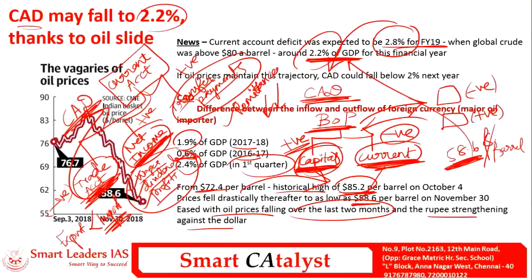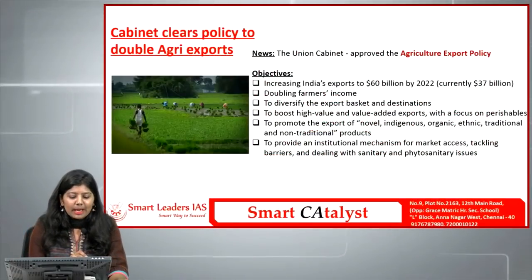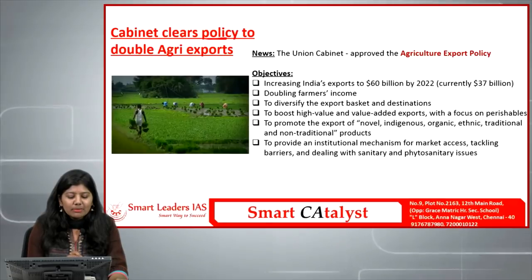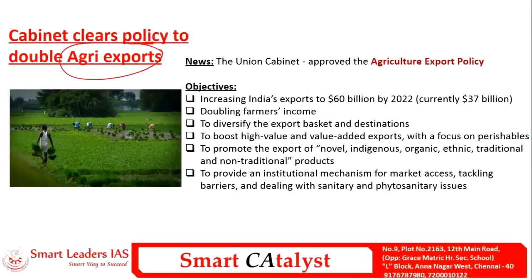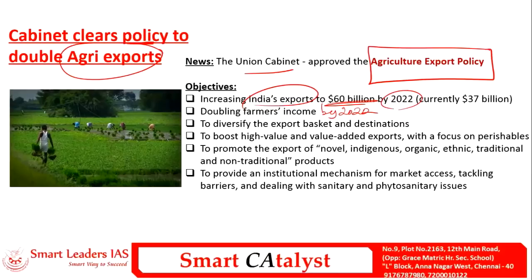In our country, the current account is in deficit and the capital account is in surplus. The next article is cabinet clears the policy to double agri exports. Our government is aiming to double farmers' income by 2022, and also for increasing exports to 60 billion dollars by 2020. The union cabinet recently approved this agriculture export policy.